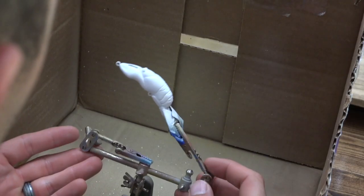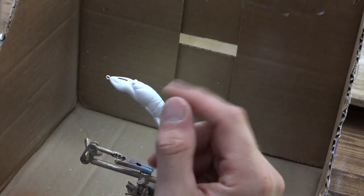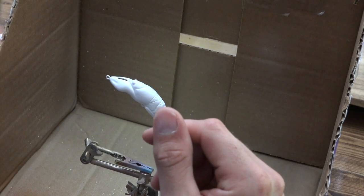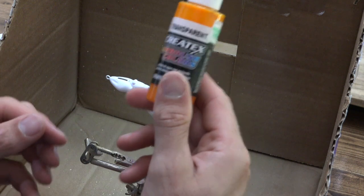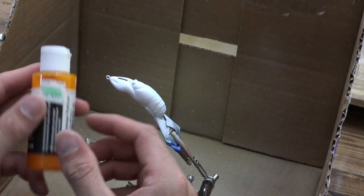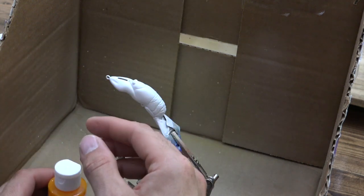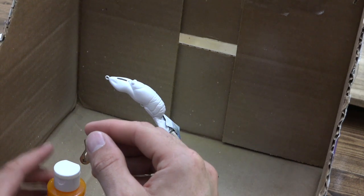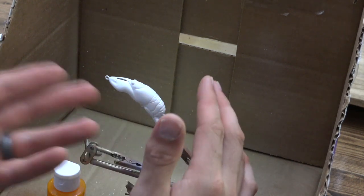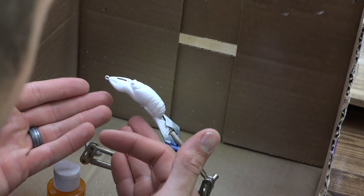Okay guys, so we've got our base coat on. Let's go ahead and do a little bit of a color rundown. We're going to be going ahead and spraying this transparent sunrise yellow on first by Createx. And then we're going to blend up. We're going to spray the entire bait, but it's mainly going to be the underbelly side.